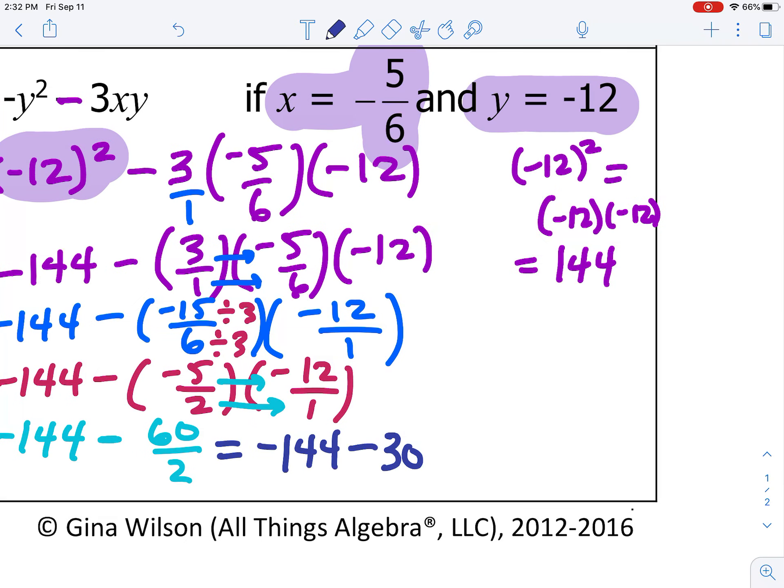So, I need to combine negative 144 with a negative 30 because you can say plus negative 30. So, the signs are the same, so we need to add these together. 144 plus 30 is 174. The answer is negative 174 because both 144 and 30 are both negative.